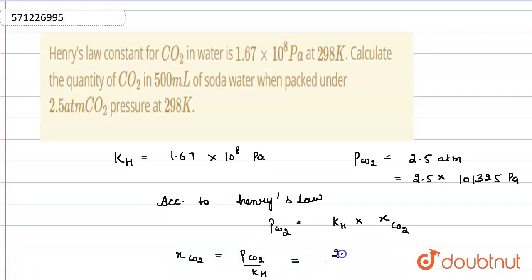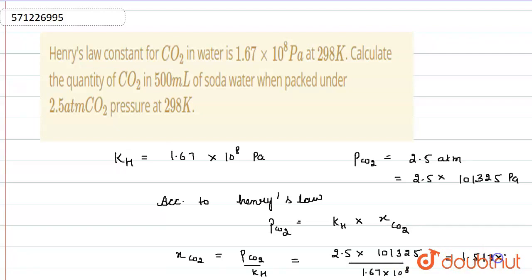Partial pressure of carbon dioxide is equal to 2.5 × 101325, divided by KH which is equal to 1.67 × 10⁸ pascal. When we multiply and solve these values, we get a mole fraction value of 1.517 × 10⁻³. This is the value of our mole fraction of carbon dioxide.